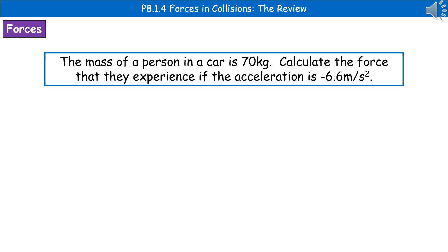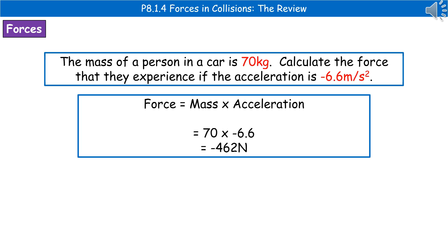You could be asked to carry out a calculation based around the forces. An example: the mass of a person in a car is 70 kilograms — calculate the force they experience if the acceleration is minus 6.6 metres per second squared. First, highlight or jot down the important information, then recall the formula. We've got mass and acceleration and need to find force, so force equals mass times acceleration. Substituting in: 70 times minus 6.6 gives a force of minus 462 newtons.